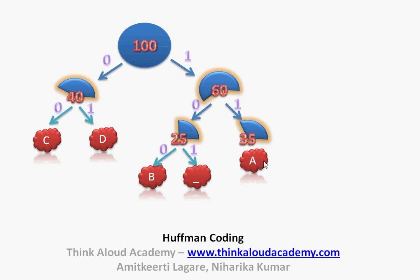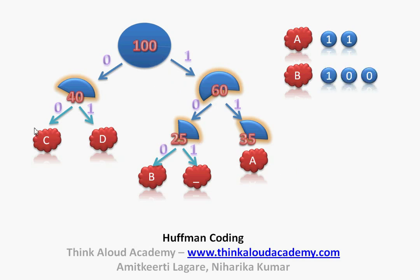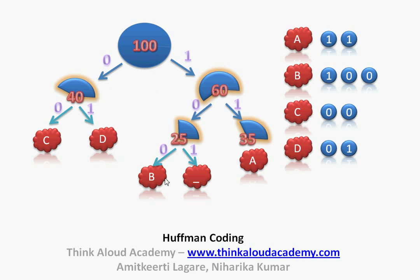Those characters which have a higher occurrence rate will have smaller lengths, and those which have the least occurrence rate will have bigger lengths. Now let us assign codes to each vertex. For A the coding scheme will be 11, because to reach A I need to go 1 and then 1. For B it is 100, for C it is 00, for D it is 01, and the coding scheme for underscore will be 101.